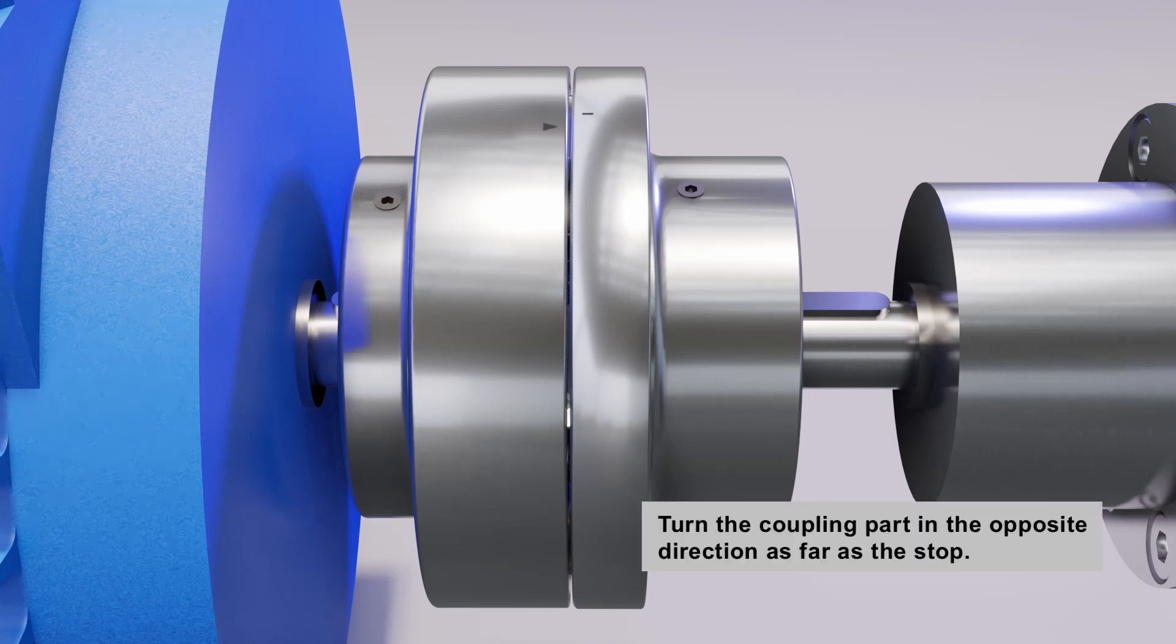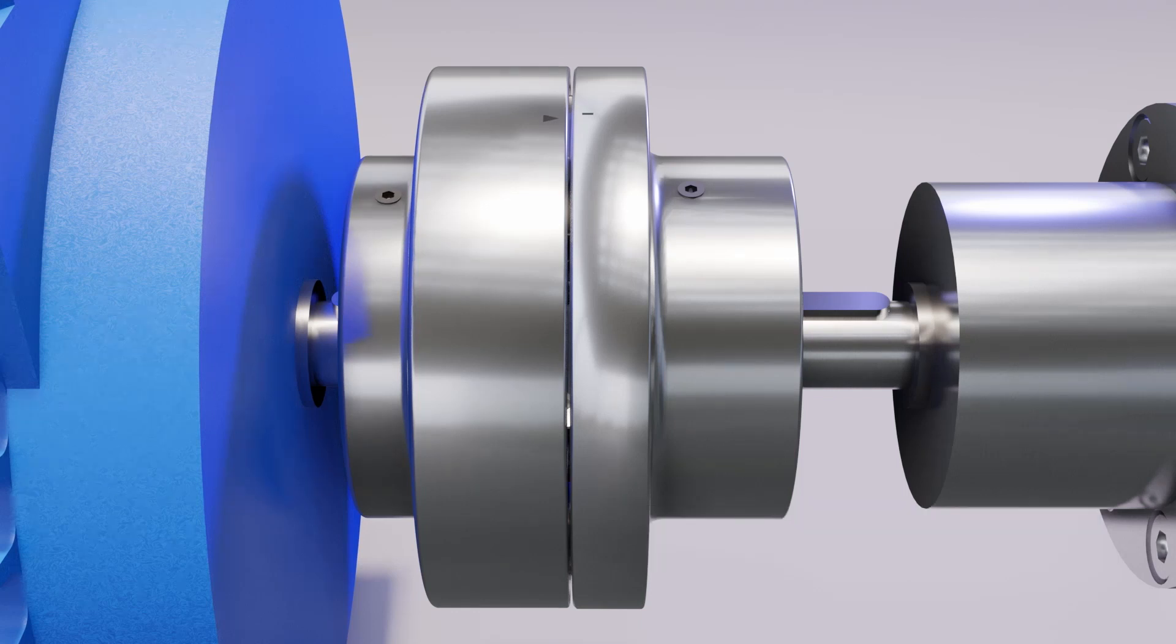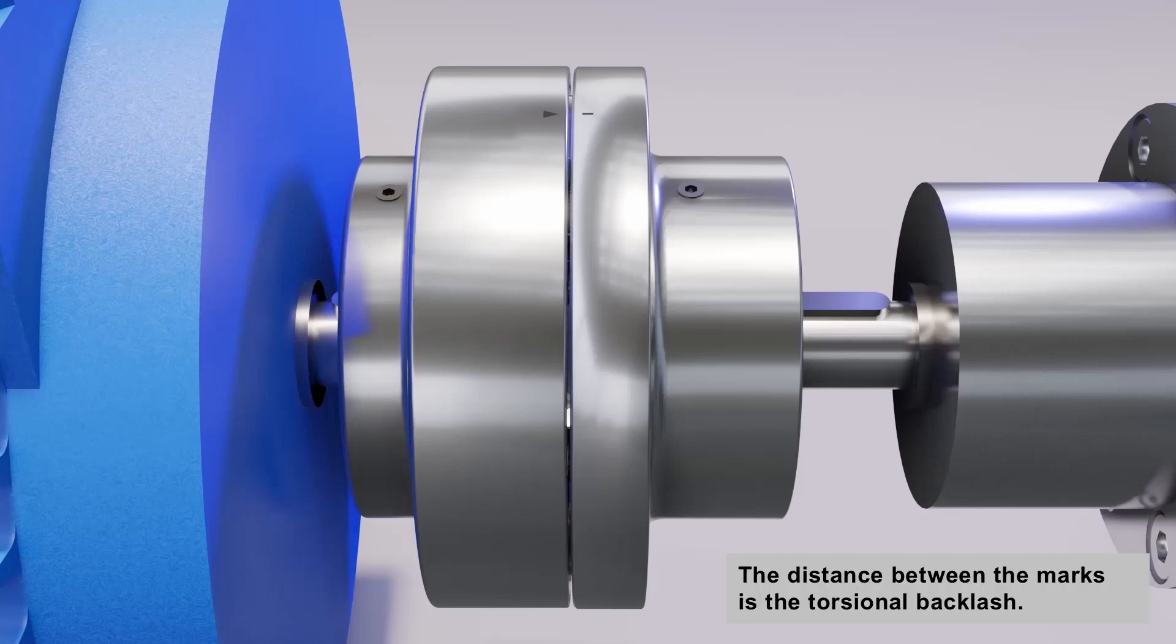Turn the coupling part in the opposite direction as far as the stop. This will cause the marks to move apart. The distance between the marks is the torsional backlash.